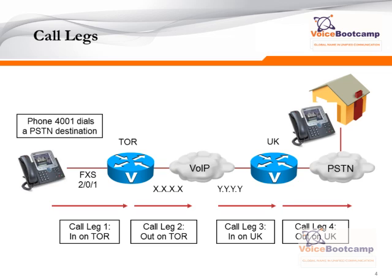Once the router receives the call, it processes it and sends the call to the destination, which is an outbound call leg, or call leg number 2. In this case, the call is going toward the UK router. As the UK router receives a call from the cloud, it is going to receive the call on an inbound leg, and that is call leg number 3.